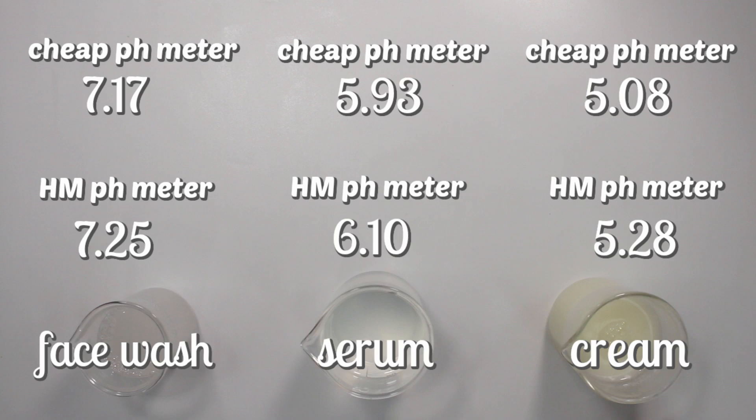The cheaper pH meter doesn't say to store it in a storage solution, so I don't. Also, the more expensive pH meter can take the temperature of products and it actually has a hold button on it. So when you're taking the pH of your product, you can take the pH meter out and it will still save the pH reading on the screen. So it does come with a lot more perks compared to the cheaper one. So overall, I recommend the more expensive one. But if you're on a budget and you're a beginner, the cheaper one will totally get you by.